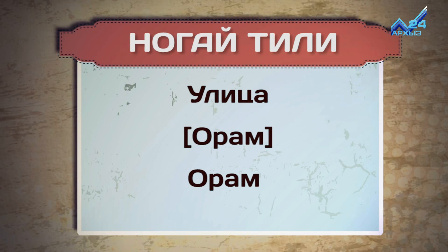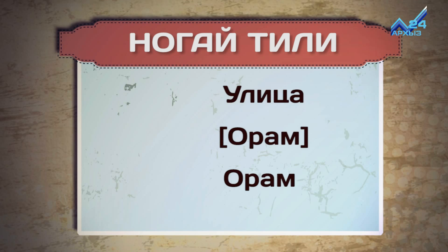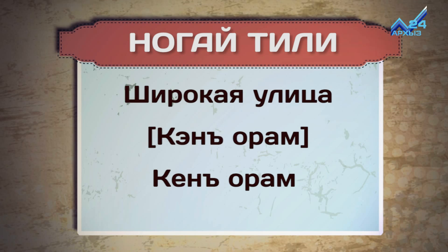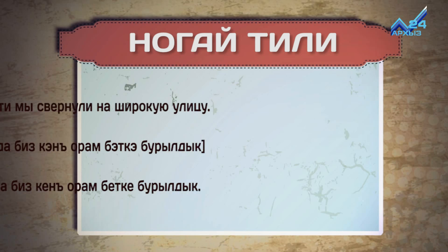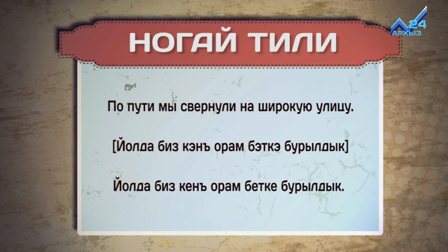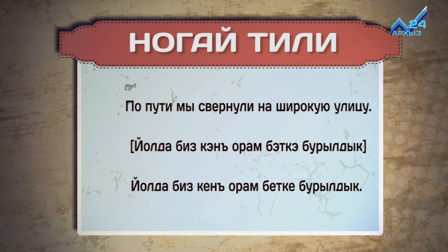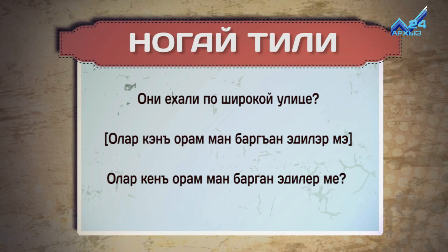Улица — Орам. Широкая улица — Кен Орам. По пути мы свернули на широкую улицу. Ёлда біз кен Орам бетке бұрылдық. Они ехали по широкой улице. Олар кен Орам ман барған эділерме? (Street — Орам. Wide street — Кен Орам. On the way we turned onto the wide street. Did they go along the wide street?)